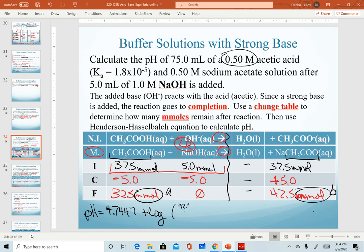So my 42.5 is going to go on top. My 32.5 is going to go on bottom. And we get a final pH value of 4.86. That is correct for rounding. That is our final answer. Notice our pH went up a little bit after we added a little bit of strong base.